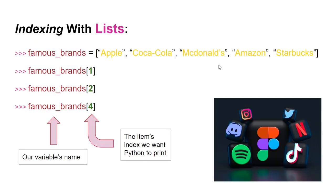As mentioned in the previous episode, we saw how to index different characters in strings. Similarly, we can use indexes to extract an element from a list. Over here you can see we are trying to access particular items of a list instead of just characters or letters. We type the variable's name — 'famous brands' — and in square brackets we type the index we want to access. I'm trying indexes 1, 2, and 4 in the idle shell.